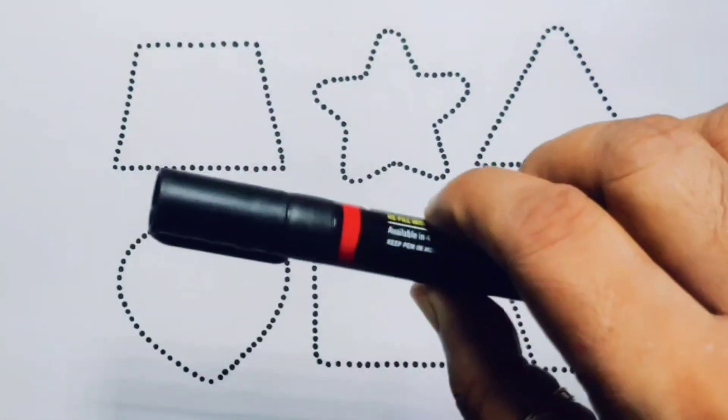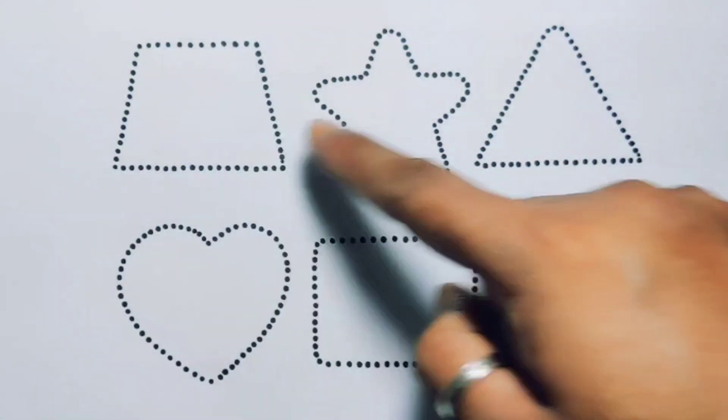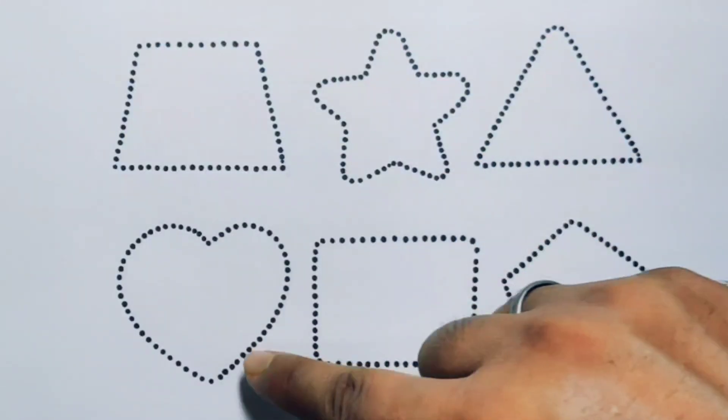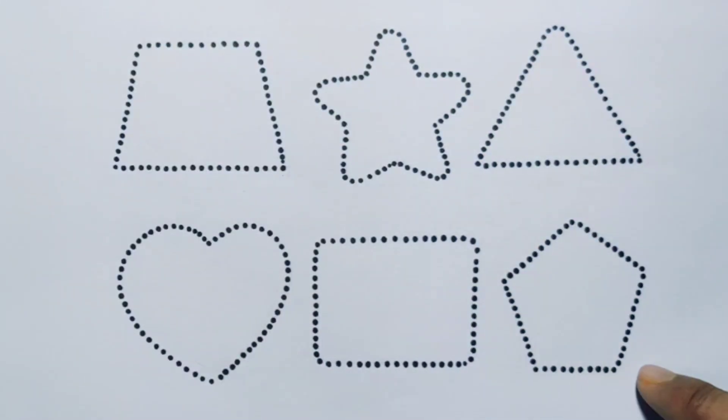And black color. Now let's learn the 2D shapes: trapezium, star, triangle, heart, rectangle, pentagon.